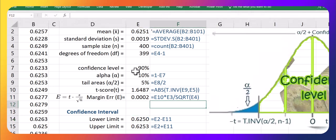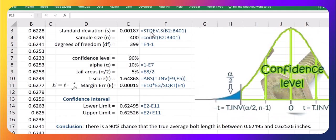So there is a 90% chance that the true average bolt length is between 0.625 and 0.6253 inches. And that concludes this video. Thanks for watching.